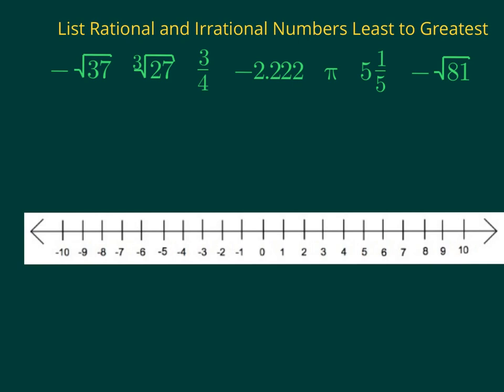The last part of this lesson: listing a combination of rational and irrational numbers least to greatest. We've been working on all different types of numbers, and now we're going to place them on the number line and use it to list them least to greatest. I want to rewrite these all as decimals. Negative square root of 37 is approximately negative 6.08, so it goes just to the left of negative 6 on the number line.